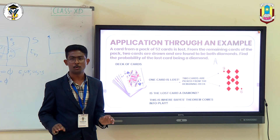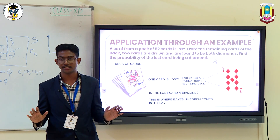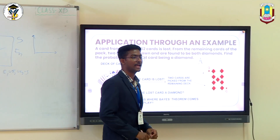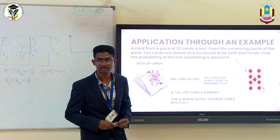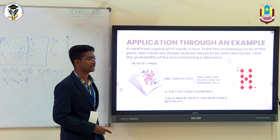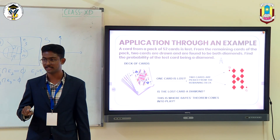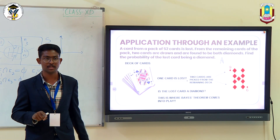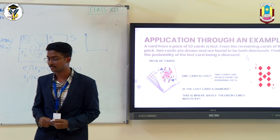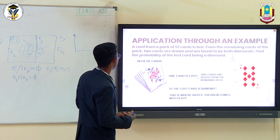I recommend all of you guys to follow 4 steps while solving any question using Bayes' Theorem. The first step would be to draw the arrow diagram. This would be a diagrammatic representation of the entire question. This would not only help you to identify the events given in the question, but would also help you to approach the question in the right manner. Let's see what the arrow diagram of this question would look like.